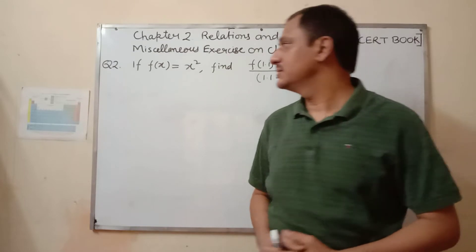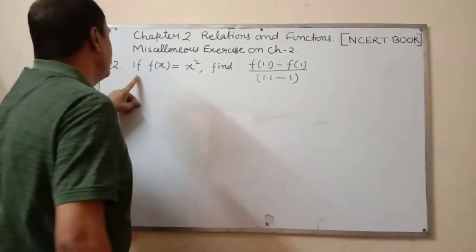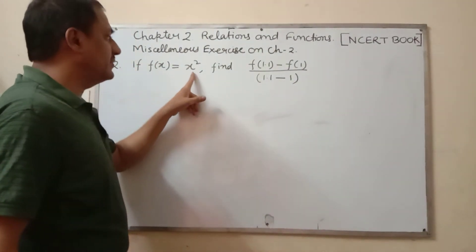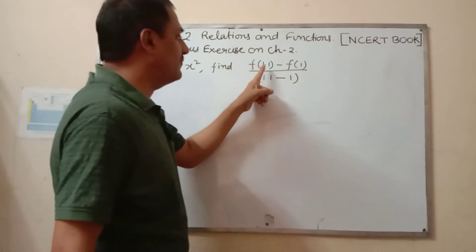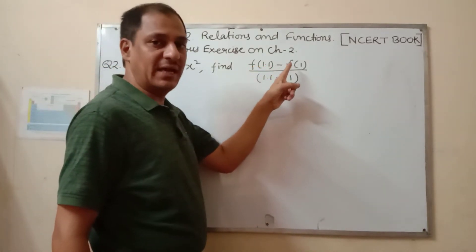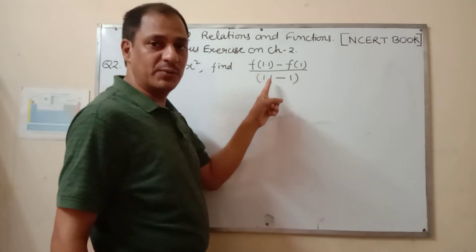The question says that if f(x) = x², find the value of [f(1.1) - f(1)] / (1.1 - 1).